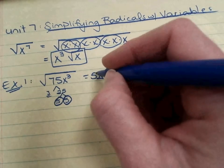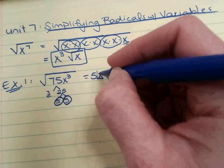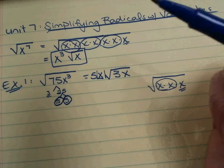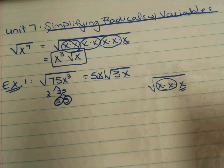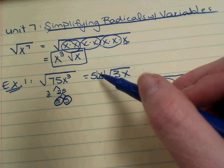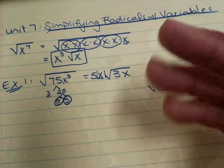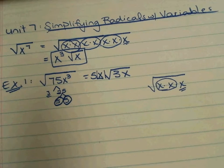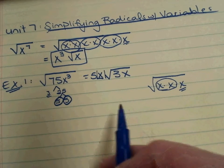Technically, we should have some absolute value symbols around this x. Because we would never get a negative result. But if we plugged in a negative value for x at this point, without the absolute value symbols, the result would be negative. So those absolute value symbols are important.